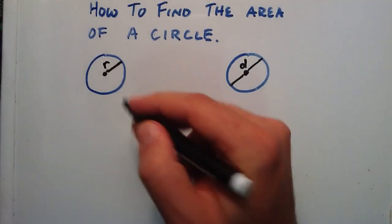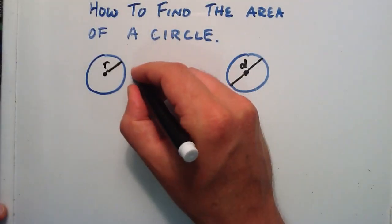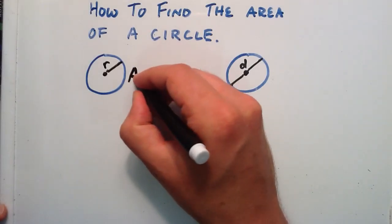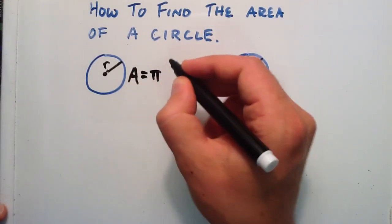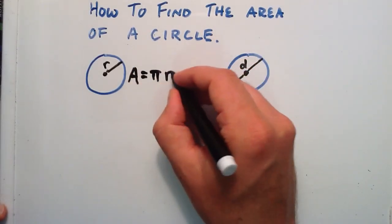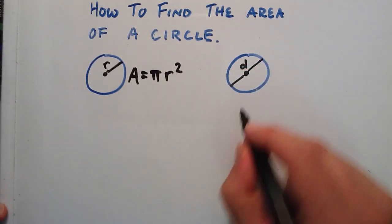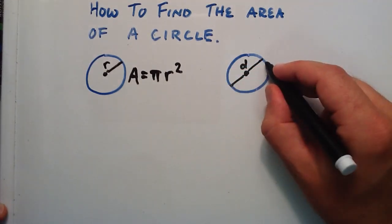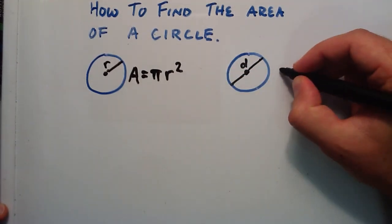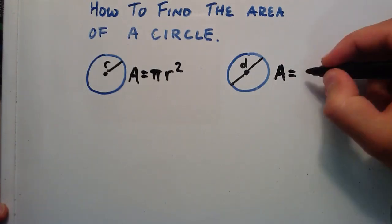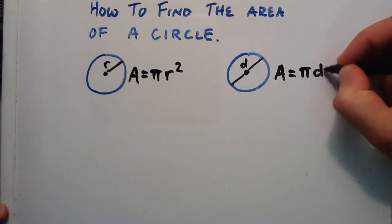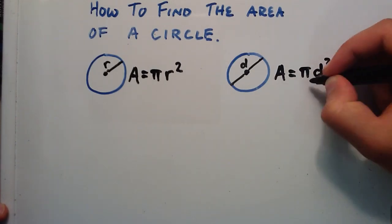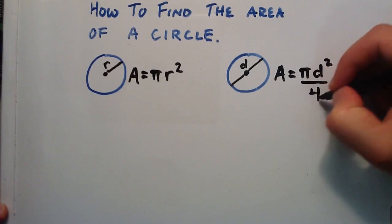If we're given the radius of a circle, we can simply use this expression: the area is equal to pi multiplied by its radius squared. And if we're given the diameter of a circle, we can use this expression: the area is equal to pi multiplied by the diameter squared divided by 4.